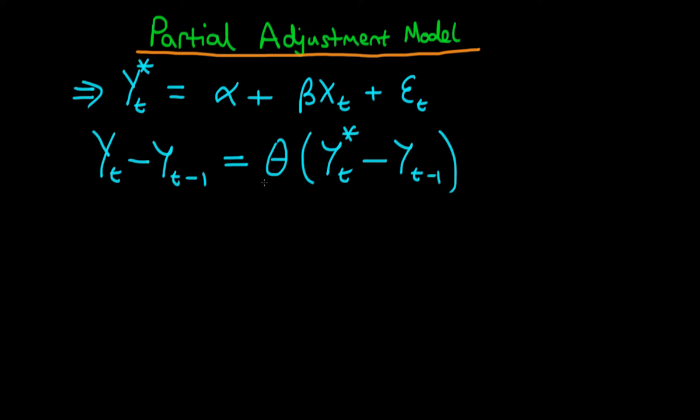We assume that theta is greater than zero and less than one. Let me explain what both assumptions mean. Essentially, if y*t, the equilibrium value of y, is above what it was in the last period, then because theta is positive, the economy takes a step in that direction because this difference inside the parenthesis will be positive.